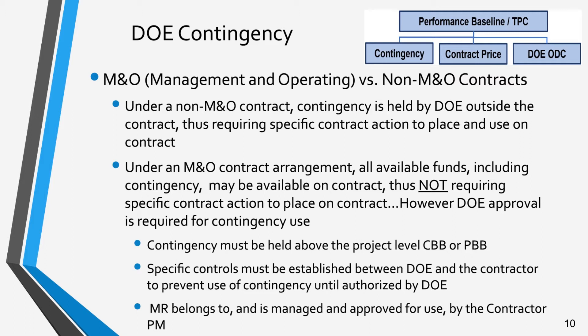Under an MNO contract arrangement, all available funds, including contingency, may be available on contract, thus not requiring specific contract action to place on contract. Nonetheless, specific written DOE approval must still be obtained for any contingency use. Specifically, contingency must be held by the MNO above the project level CBB or PBB, and explicit controls must be established between DOE, the MNO contractor management, and the project level PM for use of any contingency.